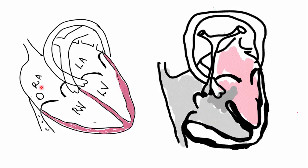You need to bear in mind that this is a spectrum of disorder — not all children with Tetralogy of Fallot are the same. For example, if you have a child with a very mild degree of pulmonic stenosis, they would be relatively pink. If you have a child who has very tight pulmonic stenosis, they will be quite blue and might start spelling quite early on.